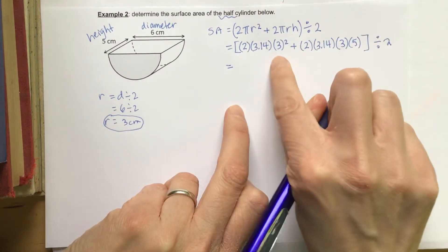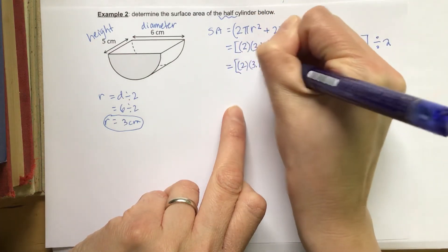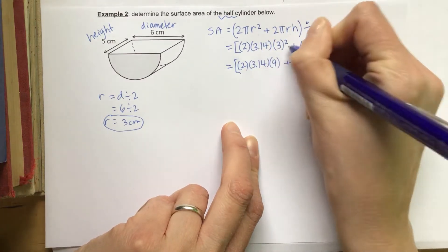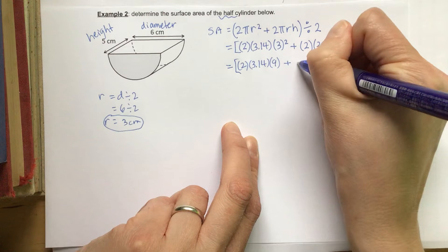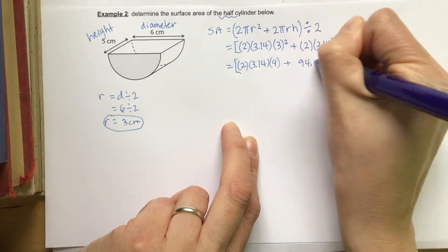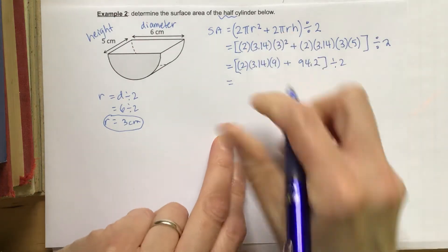So let's make sure we do BEDMAS. Again, many of you will have calculators that do BEDMAS for you, but just in case you do not, it's important to do your exponents before your multiplication. So here, we can multiply all of this together, and you get 94.2, and then all of this divided by 2 at the end.